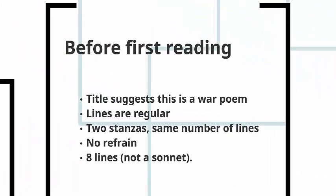Before our first reading we can see that the title of this poem suggests it is a war poem. Francis Ledwidge is an Irish poet who died in 1917 — he was a soldier in the First World War. The lines are regular; there are two stanzas with the same number of lines in each. There's no refrain and there are eight lines in total. So although it has a regular rhyme scheme and a regular number of lines, it's not a sonnet.